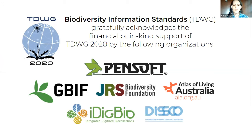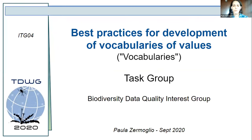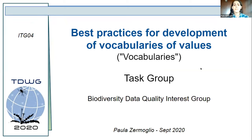So this is the ITG04 session titled 'Best Practices for Development of Vocabularies of Values,' or as we like to call it, just vocabularies. This is a task group that is part of the Biodiversity Data Quality Interest Group, and I'm Paula Zarmoglio, talking to you from Argentina.